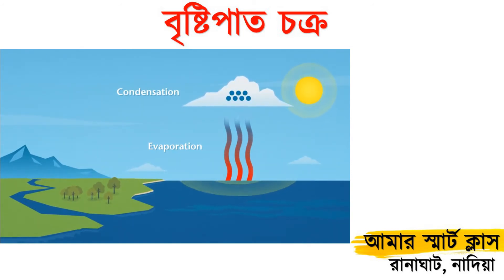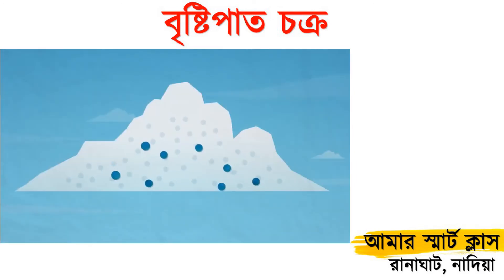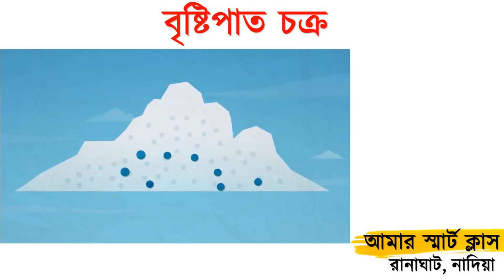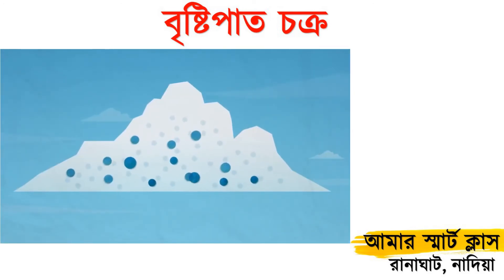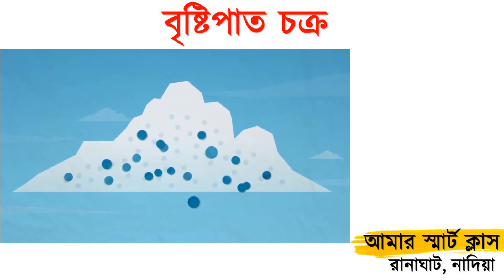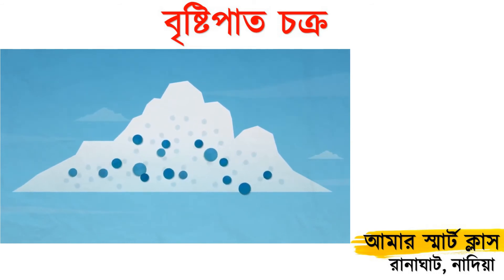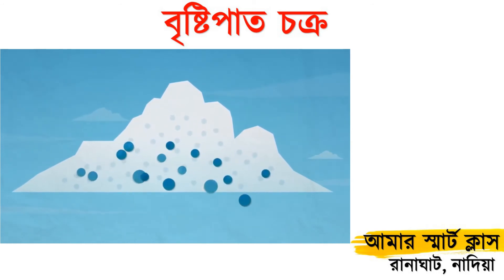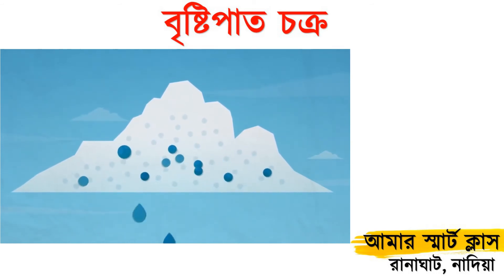Let's take a closer look. When water droplets bump into one another, they stick together and grow in size. They continue to grow until they are too heavy and fall as rain.